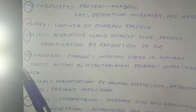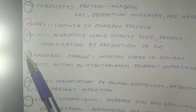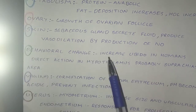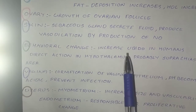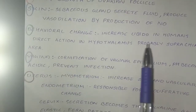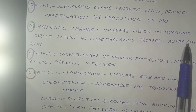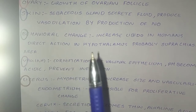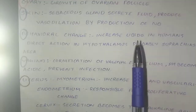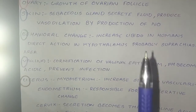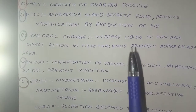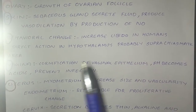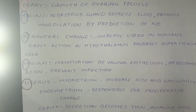B stands for behavioral changes. Estrogen increases libido in humans. This is due to the direct action of estrogen on the hypothalamus, probably occurring in the suprachiasmatic area.